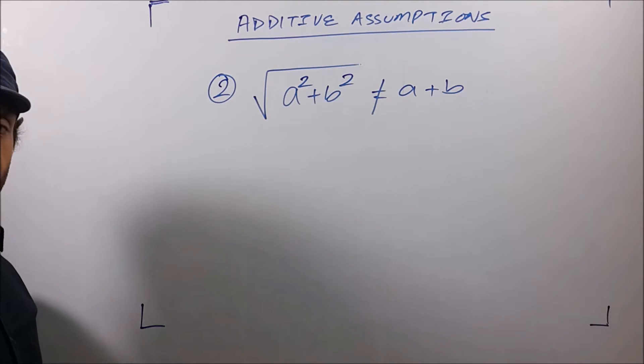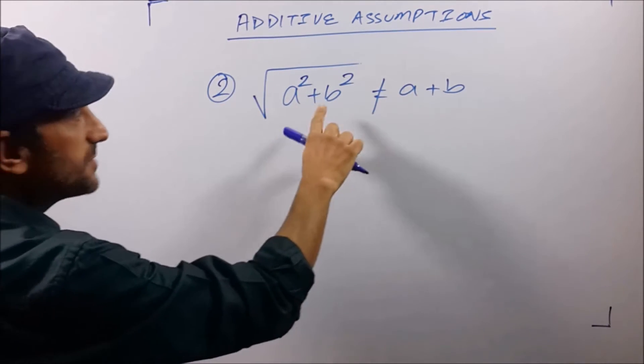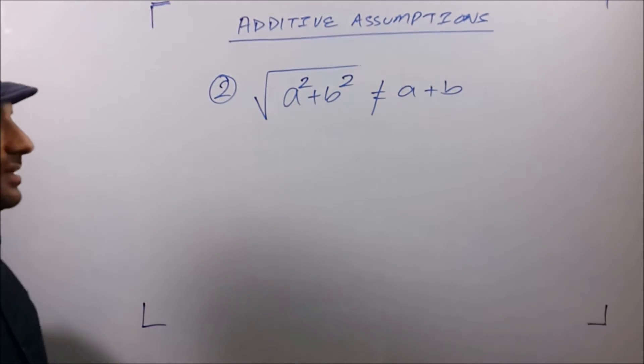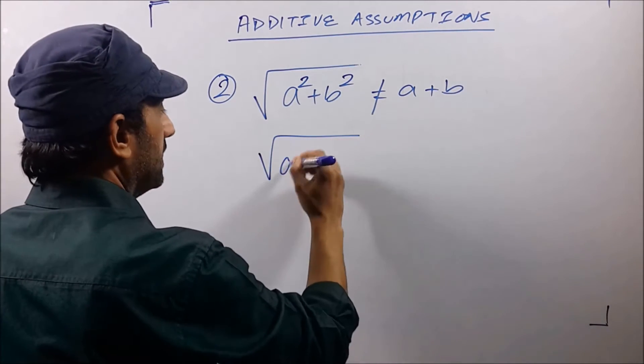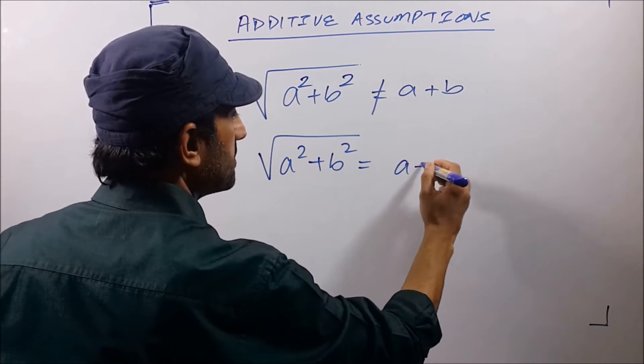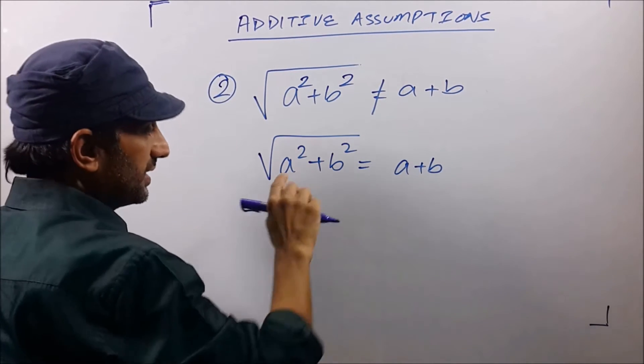The second on the list is √(a²+b²) and that is not equal to a+b. But I don't know why people write this thing as a+b because they assume that a²+b²